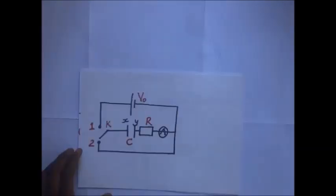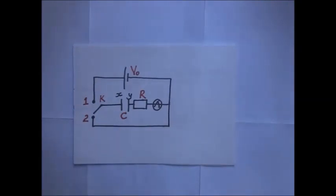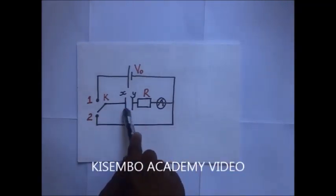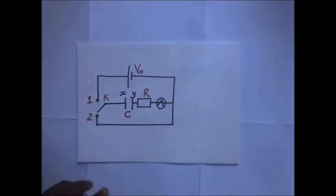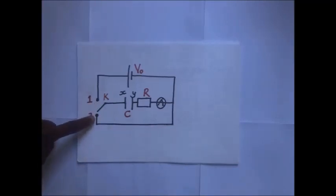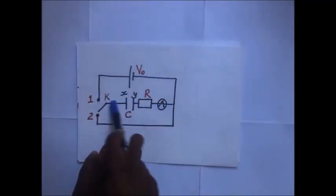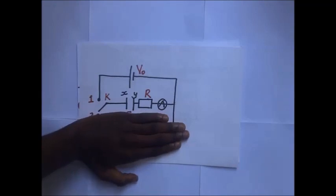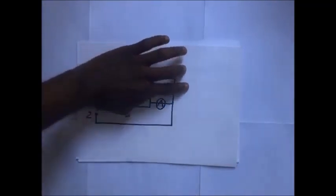Now let's look at how we charge this capacitor. We have a diagram that will be the basis for our explanations on charging and discharging. In this diagram we have a resistor, an ammeter, the capacitor, a source of voltage labeled V-naught, and a switch. This switch can be connected to terminal one or terminal two. When connected to terminal one the upper circuit is active; when connected to terminal two the lower circuit is active.